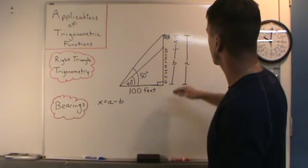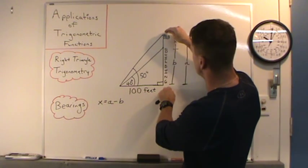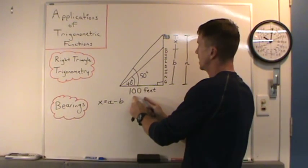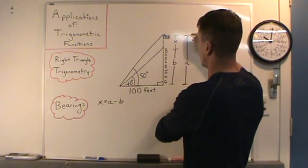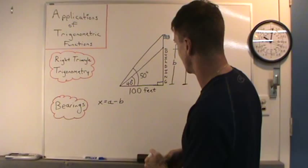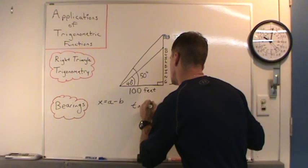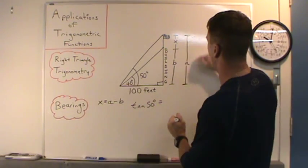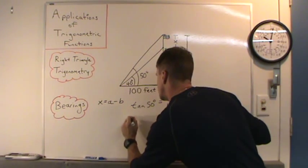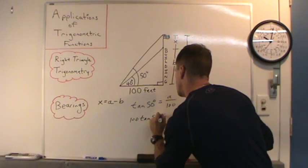Let's start with a. Notice there are two right triangles here. A is the height of this big right triangle, which has this big 50 degree angle. We've got the adjacent side of 100 and the opposite side we'll call a. Opposite and adjacent — which trig function? TOA — tangent. So tangent of 50 degrees equals opposite a over adjacent 100. I'll multiply 100 on both sides. So 100 tangent of 50 equals a.